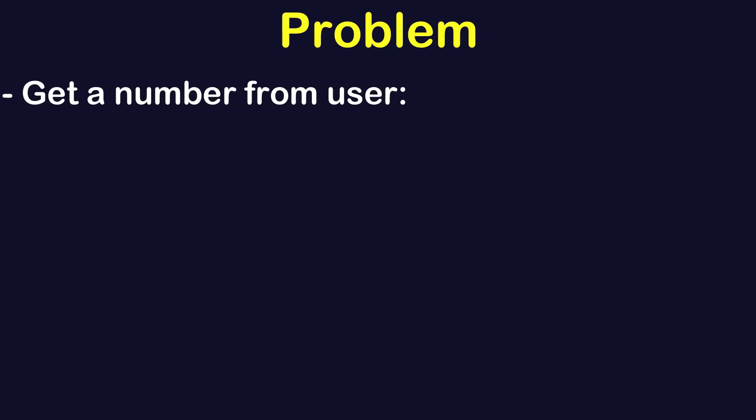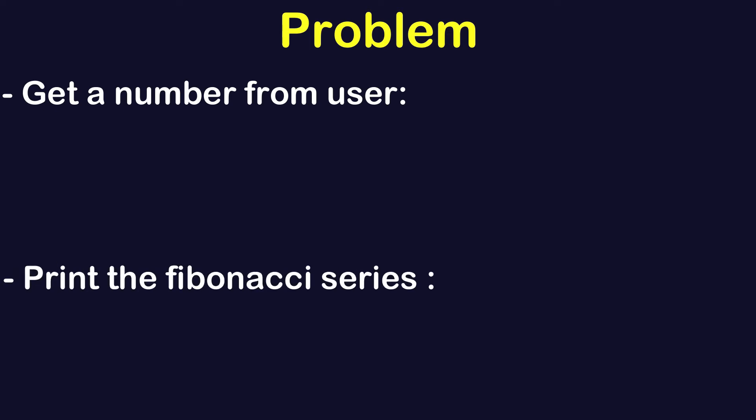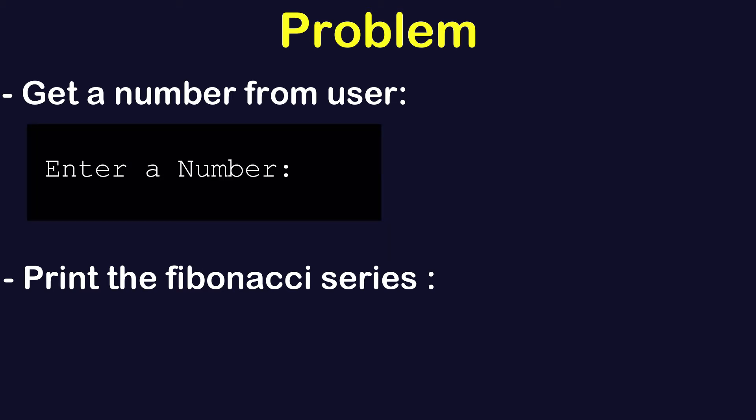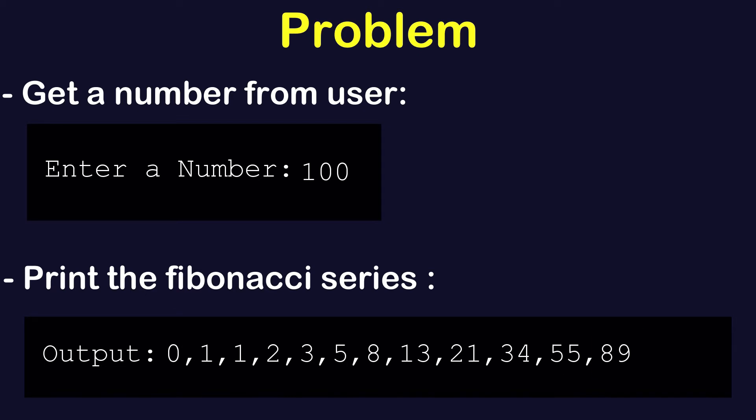The problem is that we are going to get a number from the user and print Fibonacci series numbers till the entered number. When the program is executed, it will ask for a number — for example, if the user enters 100, it should display the Fibonacci numbers less than 100. In this case the output will go till 89.